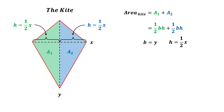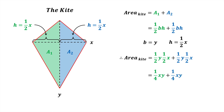Making these substitutions means that the area of the kite equals half y times half x plus half y times half x. These two terms can be simplified to a quarter xy plus a quarter xy. Finally, these two like terms sum together to give the area of the kite as half xy.